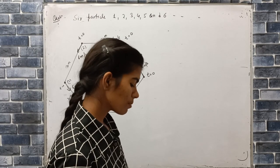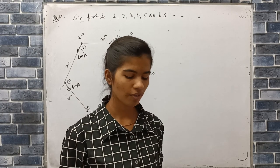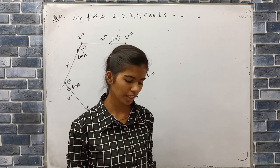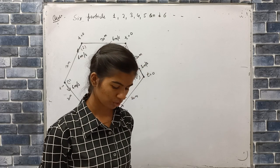Question is, 6 particles 1, 2, 3, 4, 5 and 6 are placed at the vertex of a hexagon of side A at T equal to 0.